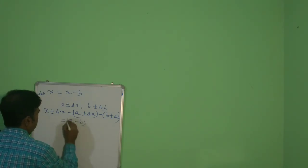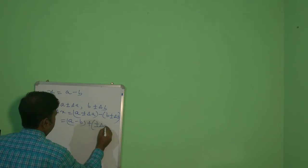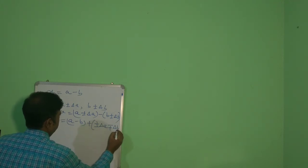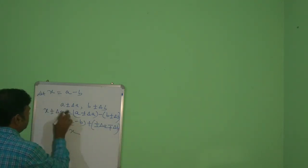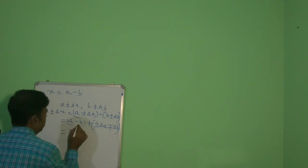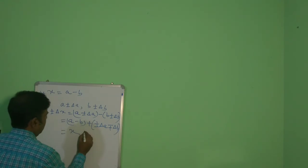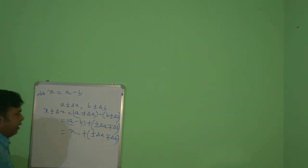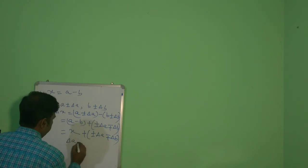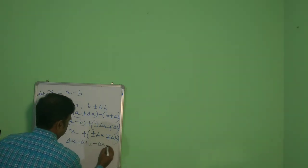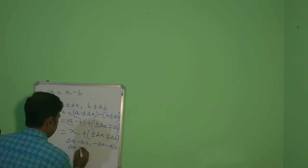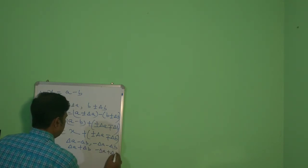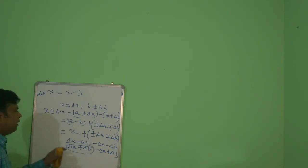So X plus minus delta X equals A plus minus delta A, minus B plus minus delta B. This equals A minus B, plus minus delta A, plus minus delta B (since the minus sign applies). Since X equals A minus B, we get X plus minus delta A plus minus delta B. Here also four possible values exist: delta A minus delta B, minus delta A minus delta B, delta A plus delta B, minus delta A plus delta B. Out of these, the maximum value is again delta A plus delta B.